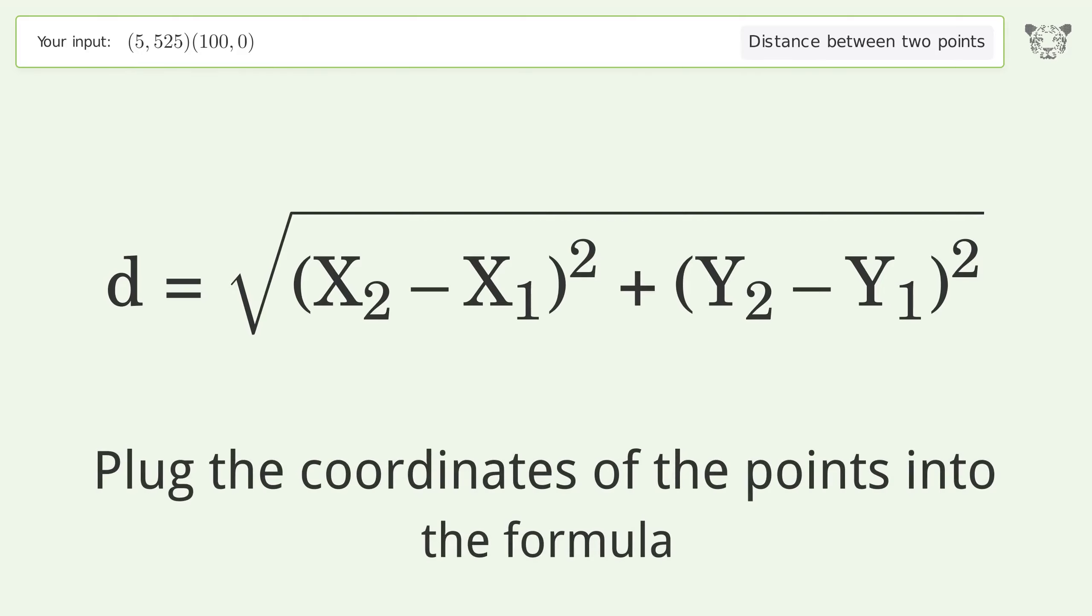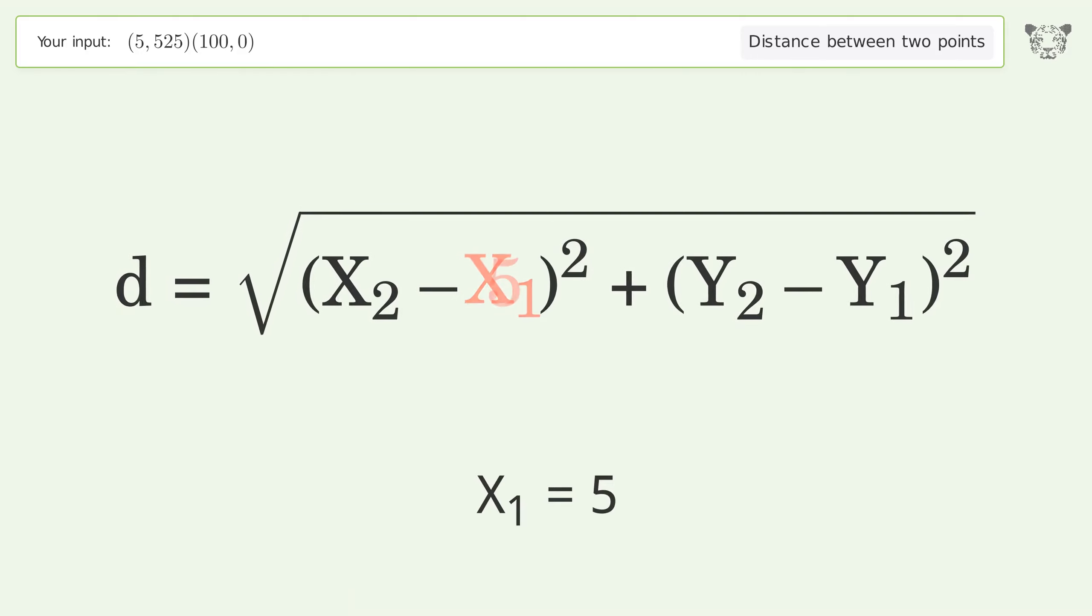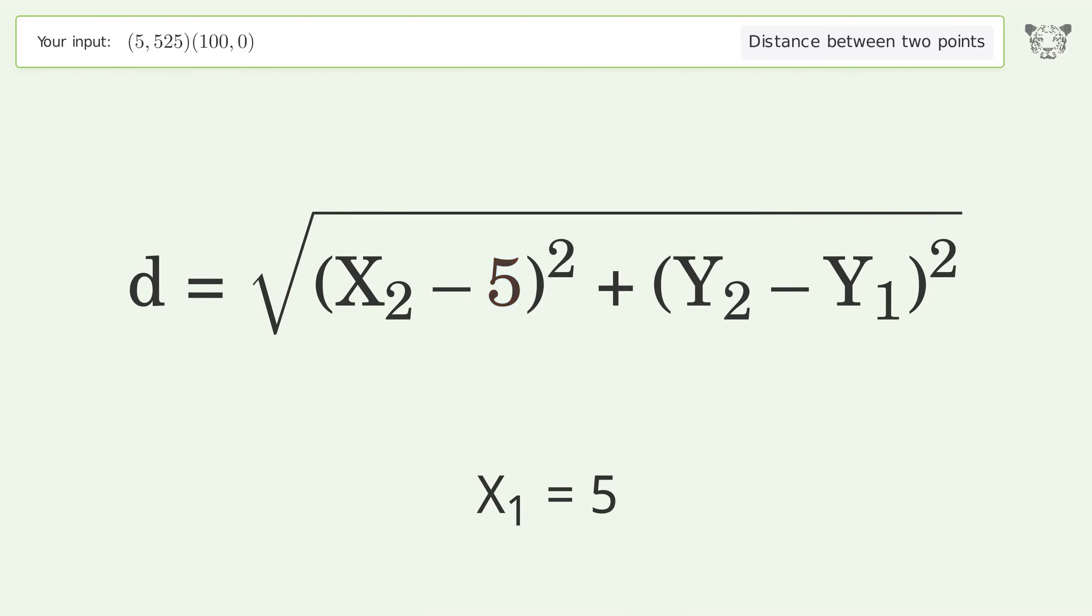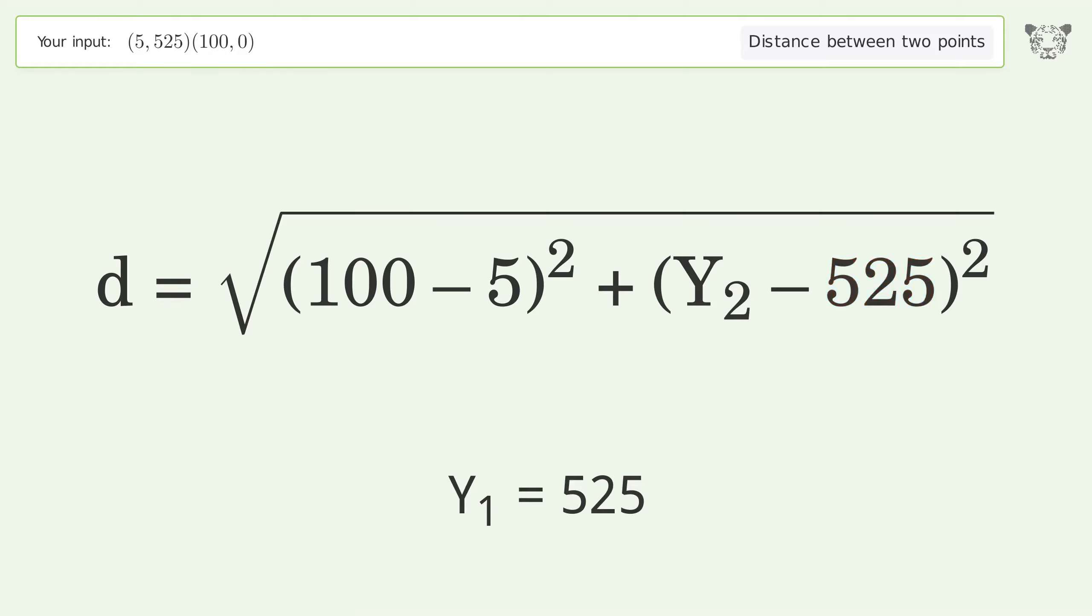Plug the coordinates of the points into the formula: x1 equals 5, x2 equals 100, y1 equals 525, and y2 equals 0.